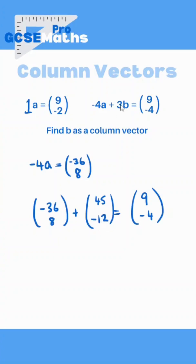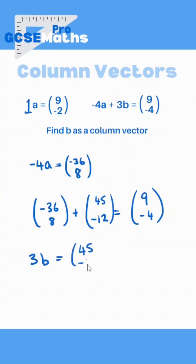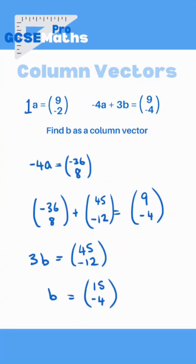Now that's not our final answer — that was the 3b part. So we can write down that 3b is (45, -12), and therefore b we just divide by 3. 45 divided by 3 is 15, and -12 divided by 3 is -4. So there's our answer: b as a column vector is (15, -4).